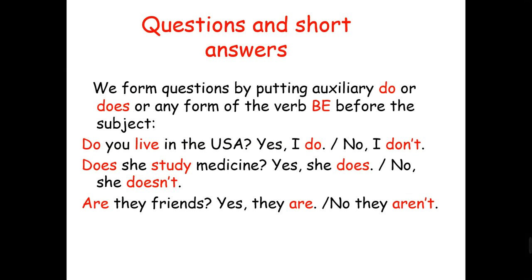Now let's move to questions and answers. We form questions by putting the auxiliary verb 'do' or 'does' according to the subject, or a form of verb 'be,' before the subject. For example: 'Do you live in the USA?' — we start with 'do' because the subject is 'you,' and 'live' comes in the infinitive form. Short answers: 'Yes, I do' or 'No, I don't.' 'Does she study medicine?' — we use 'does' because the subject is 'she.' Short answers: 'Yes, she does' or 'No, she doesn't.' With verb to be: 'Are they friends?' — 'Yes, they are' or 'No, they aren't.'